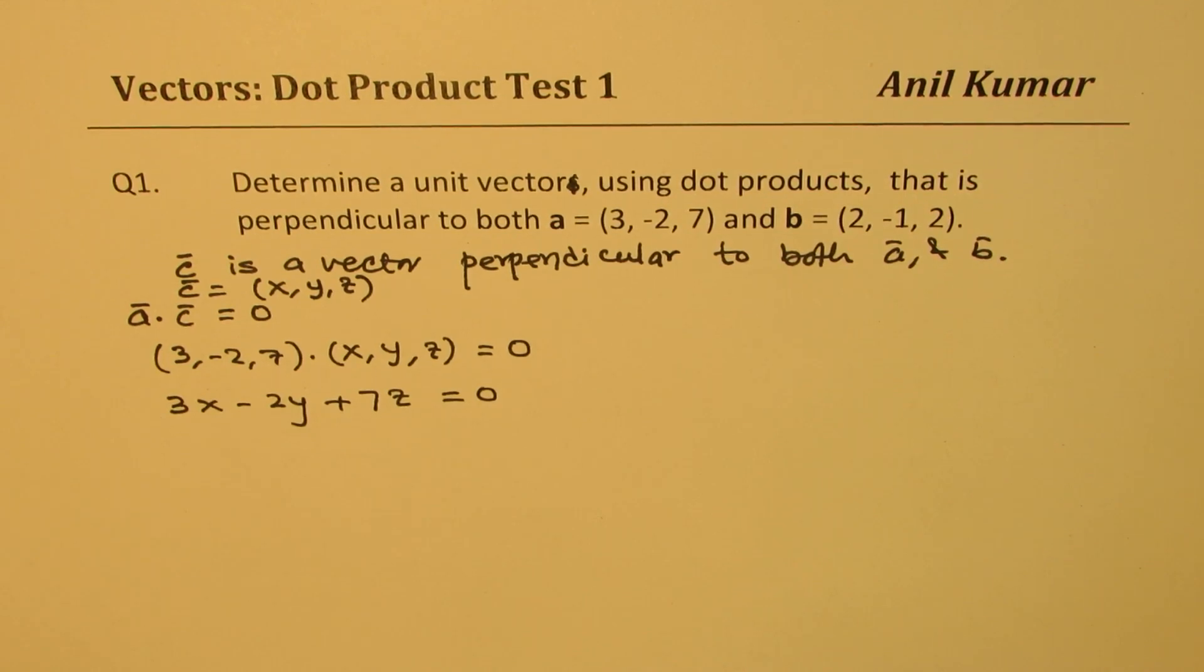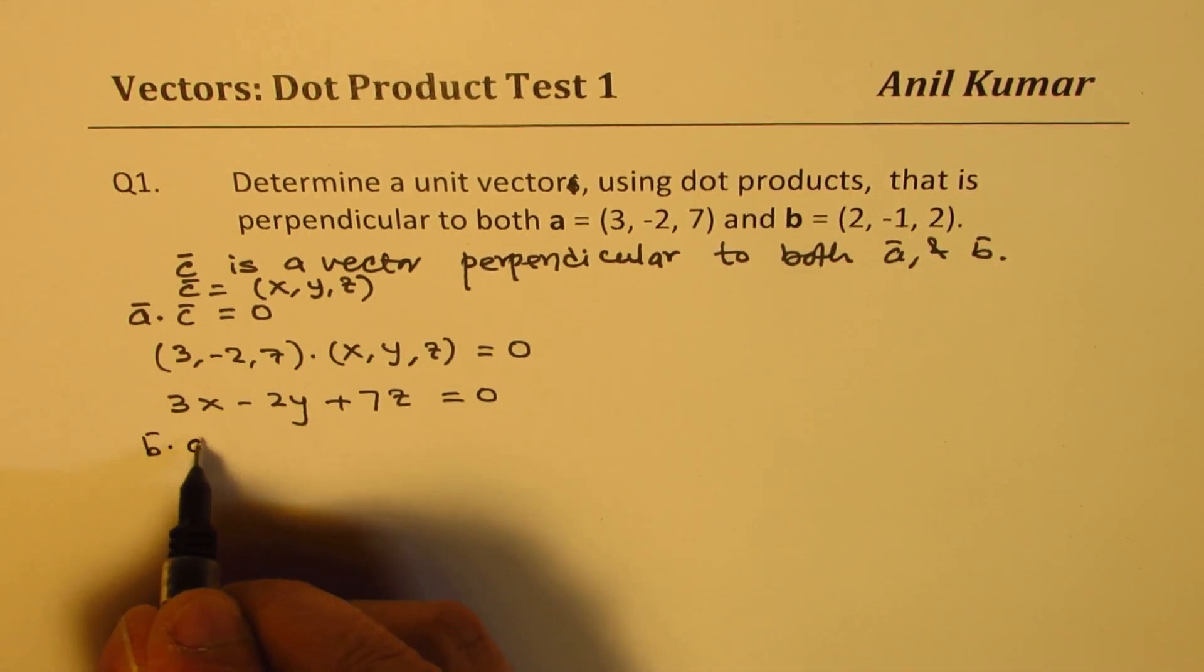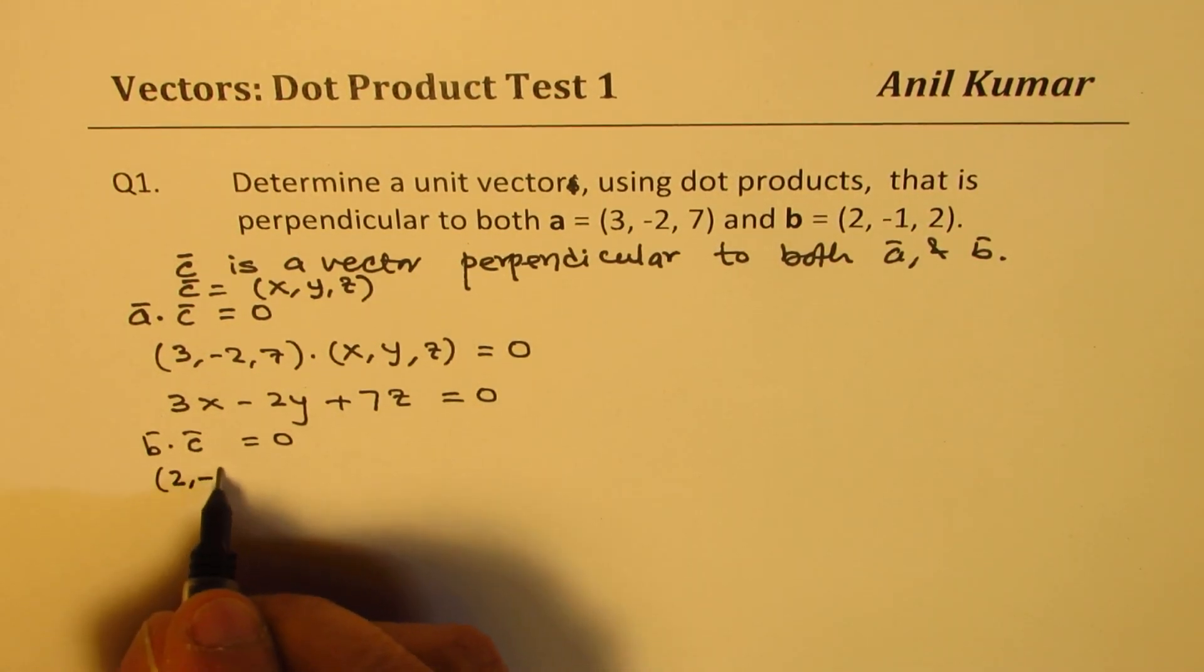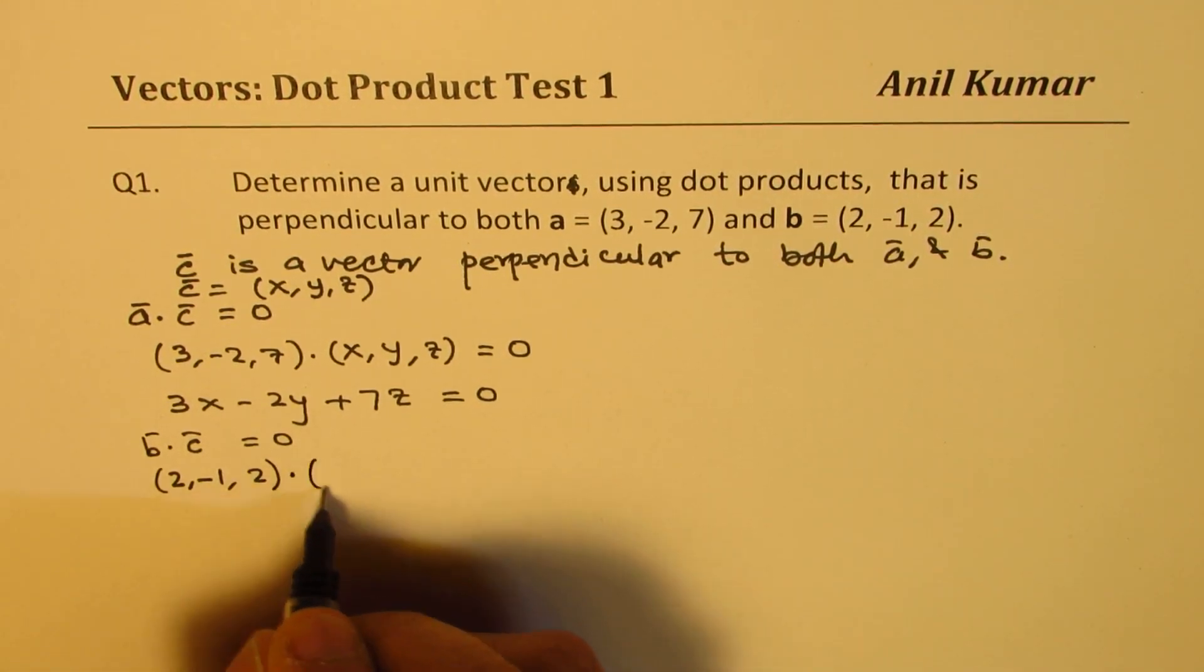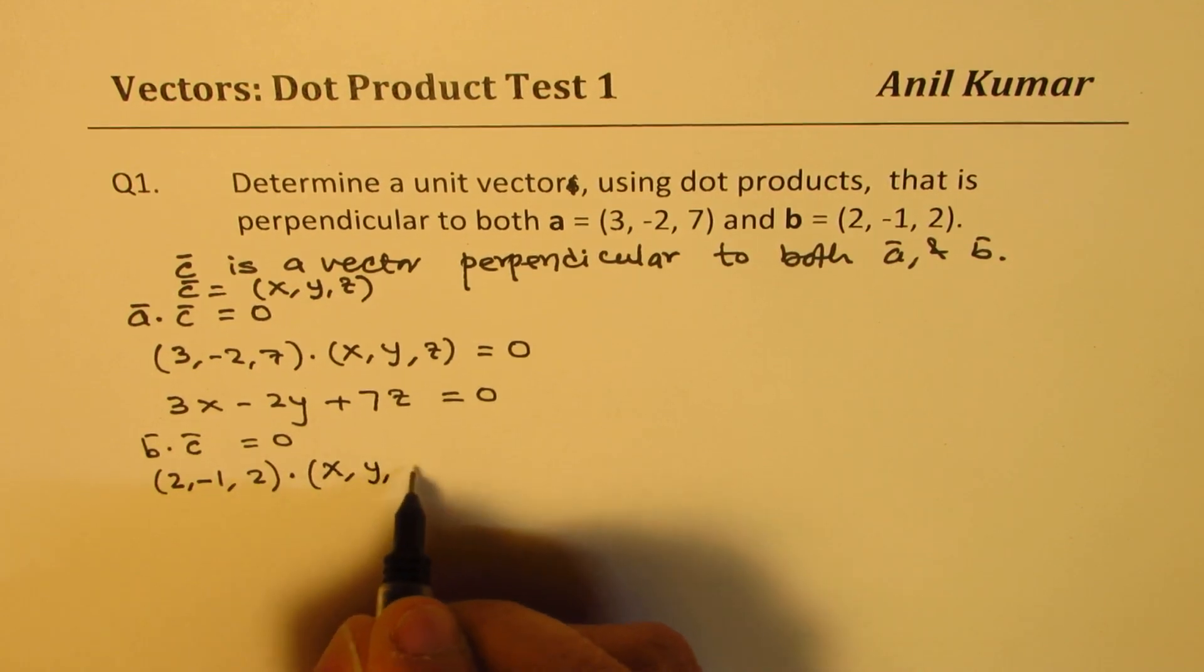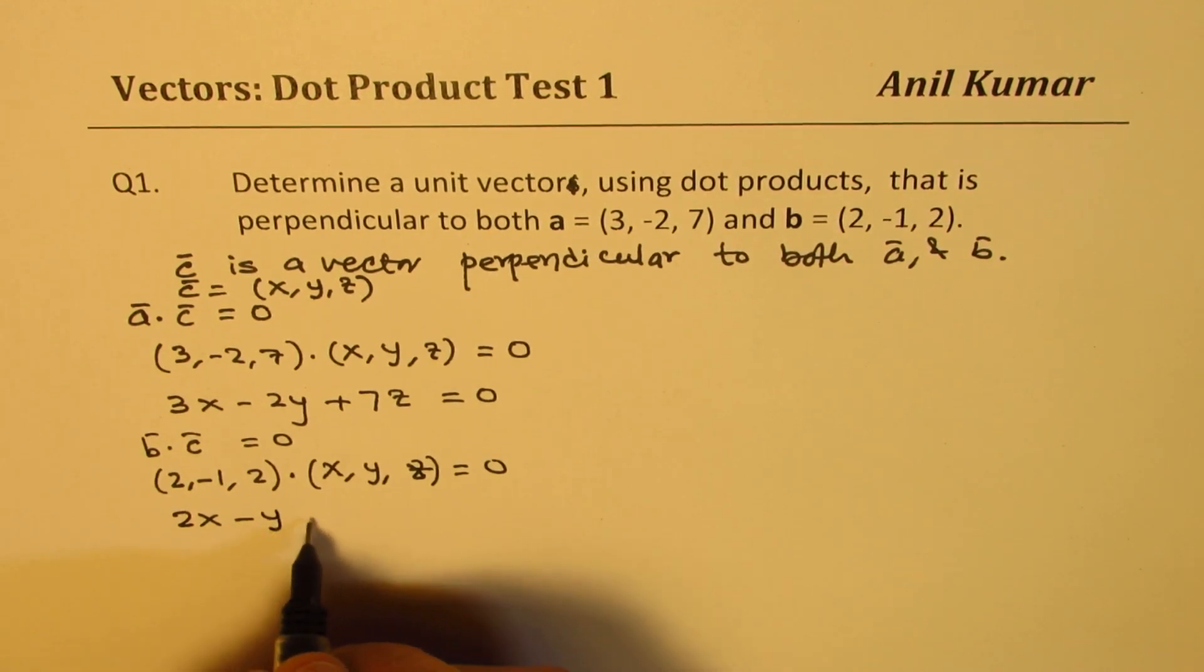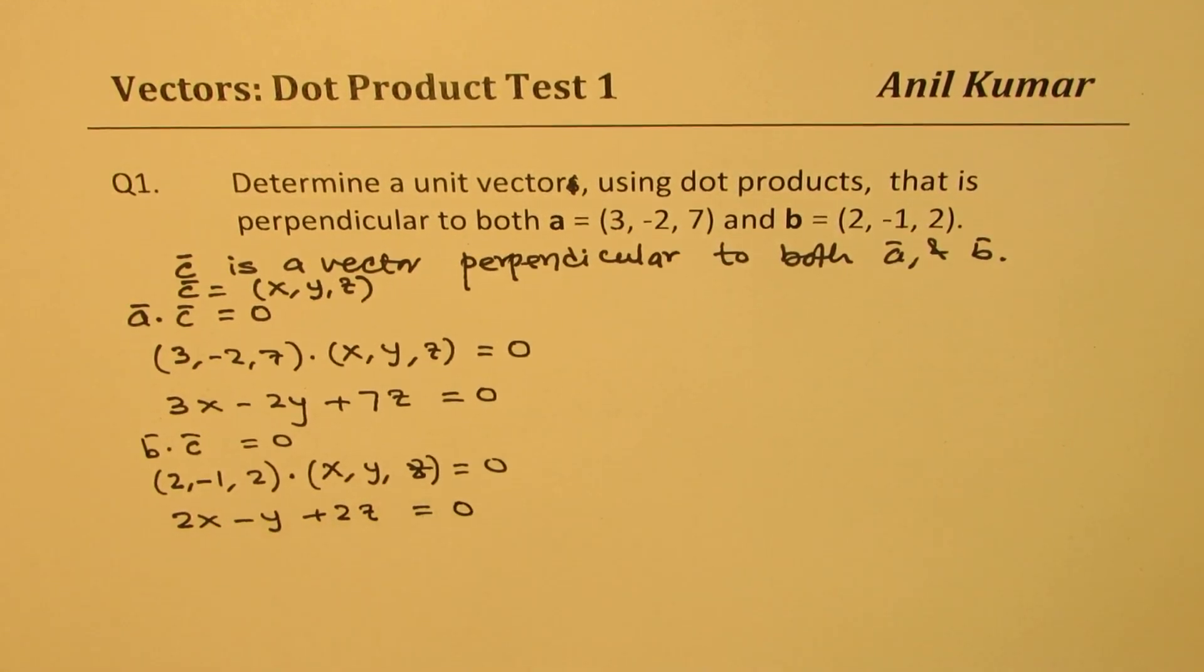Now, that also means that B dot C is also equal to 0. So that means 2, -1, 2 dot x, y, z equals to 0. Or 2x - y + 2z equals to 0.